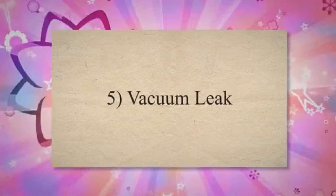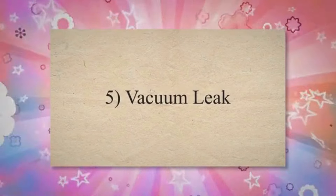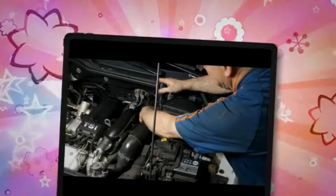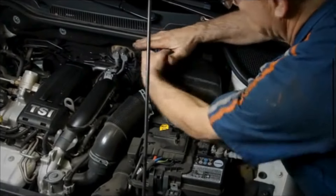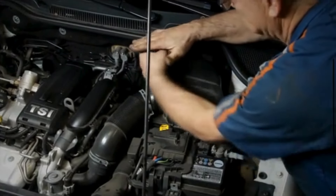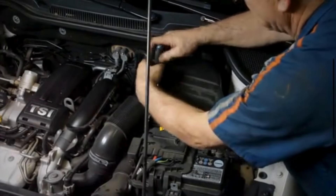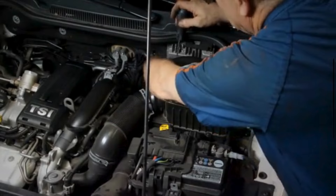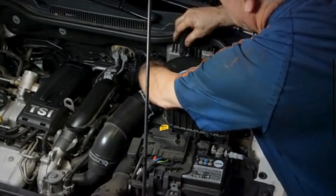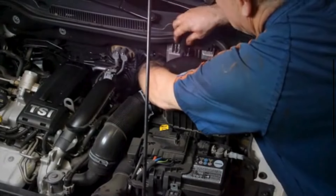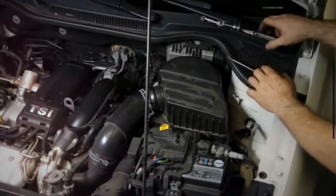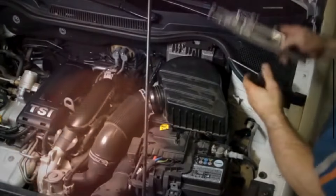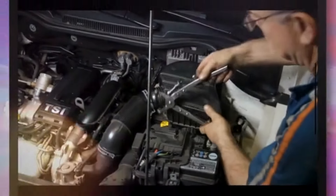5. Vacuum leak. A vacuum leak allows unmetered air to enter the intake system, which upsets the balance of the air-fuel mixture. Common sources of vacuum leaks include damaged hoses, gaskets, or intake manifold issues.